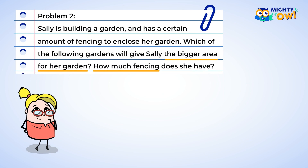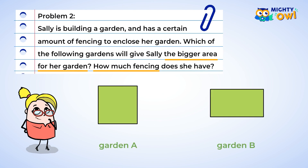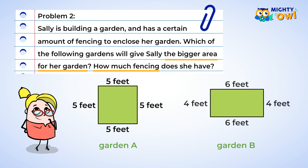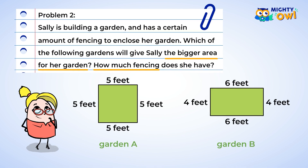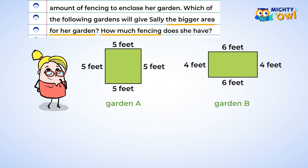Let's practice with a few more problems and see if we can make even more discoveries. Sally has two possible gardens that she could fence in. Both have the same perimeter. Let's start by finding the perimeter of each of these rectangles to make sure it's the same. We want to add up the side lengths. Garden A: 5 plus 5 plus 5 plus 5 equals 20. Now Garden B: 6 plus 4 plus 6 plus 4 is equal to 20. Sally has 20 feet of fencing.